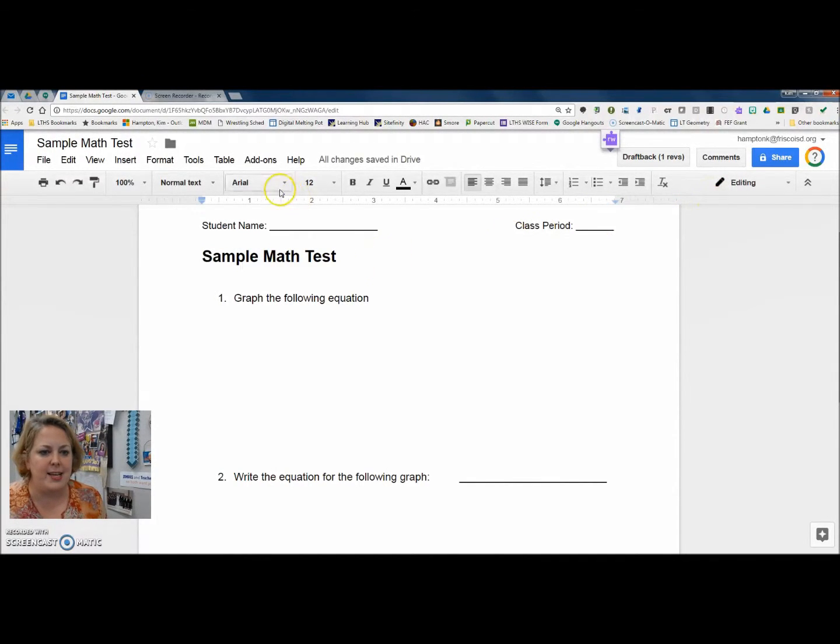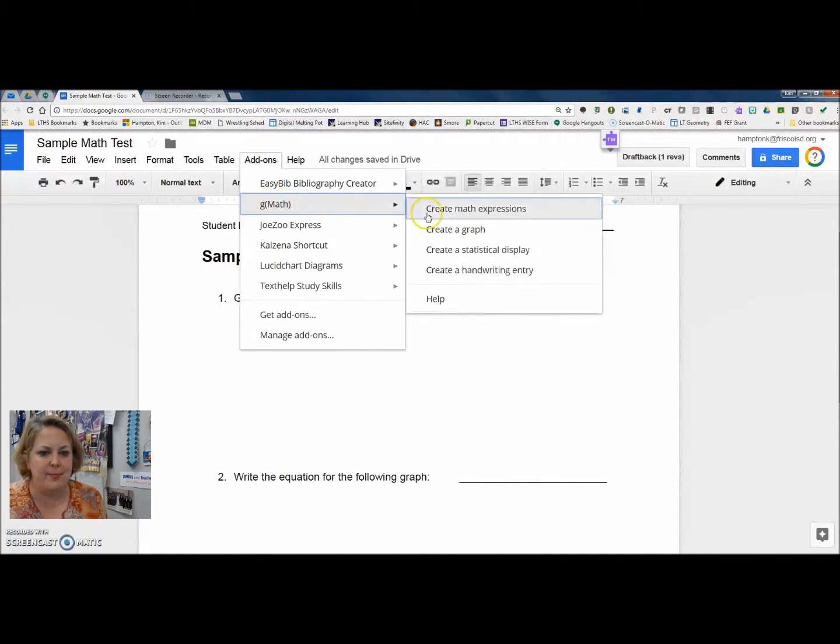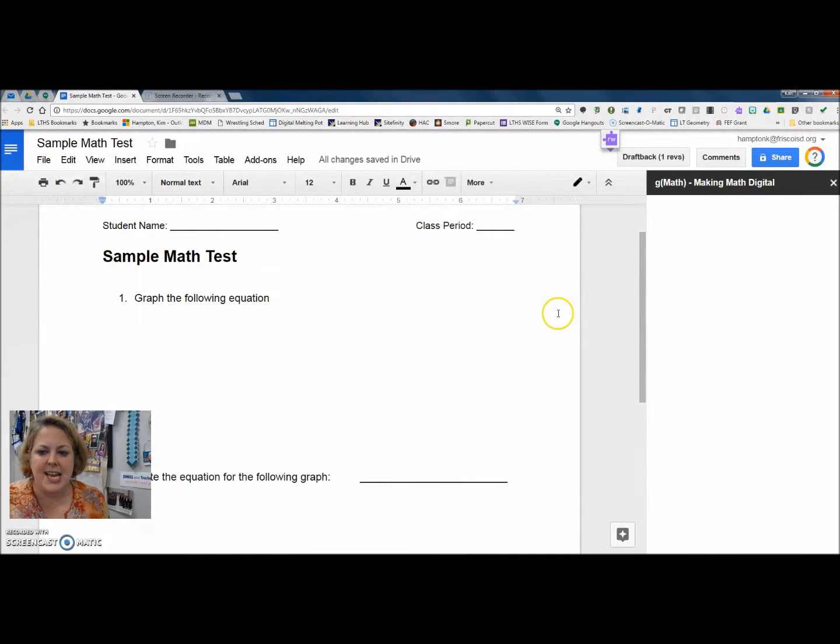Now, once you've got that, just go up here to add-ons, GMath, create math expressions. And you can type in expressions and equations to throw into your document. For example, y equals 2x minus 3. Now, my spacing doesn't matter. It's going to fix all of the spaces for me. So I love that. And then you just click the left arrow button to add it to your document.